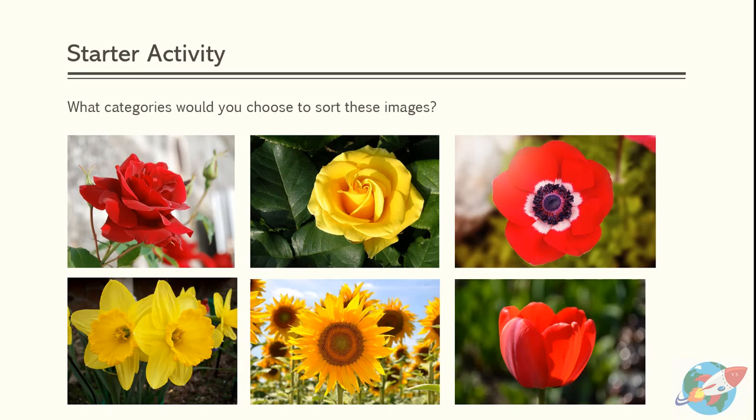Let's do a starter activity. Take a look at the images of these flowers you can see on the screen. What categories would you choose to sort these images? Take a moment to pause the video and have a think about what categories you might choose. When you're ready, return to the video to check your answers.